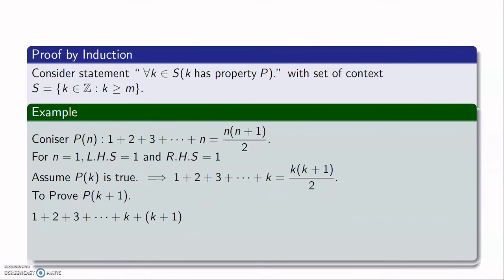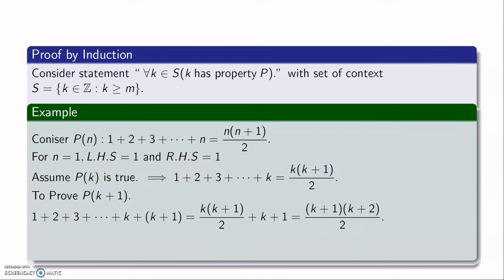The sum from 1 to k+1 equals k(k+1)/2 (by the inductive assumption) plus the last term k+1. Factoring out (k+1), we get (k+1)(k/2 + 1) = (k+1)(k+2)/2. So P(k+1) is proved. Hence, by the principle of mathematical induction, the statement P(n) holds for all natural numbers n.